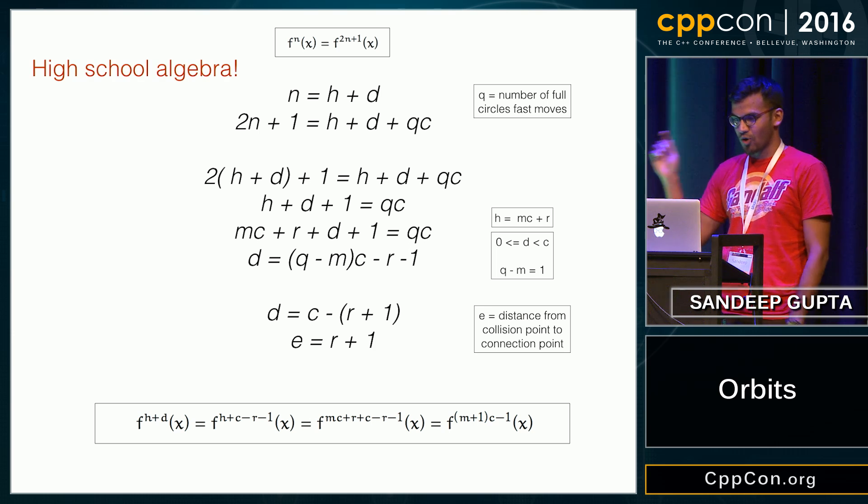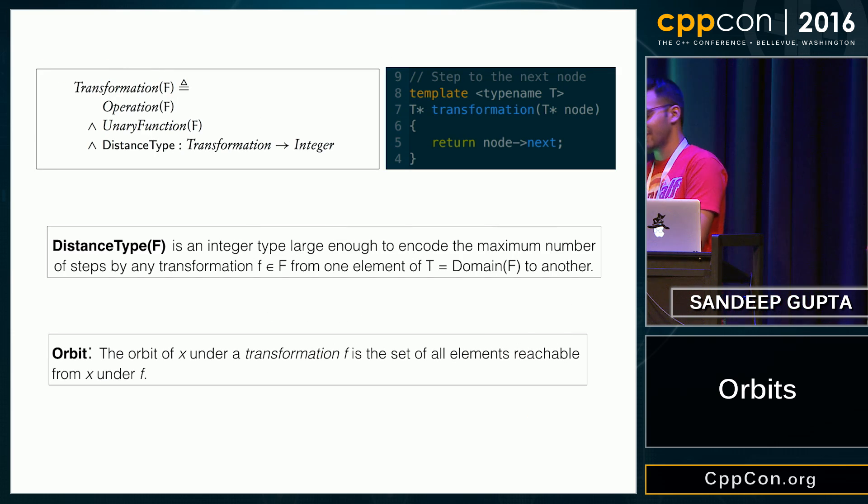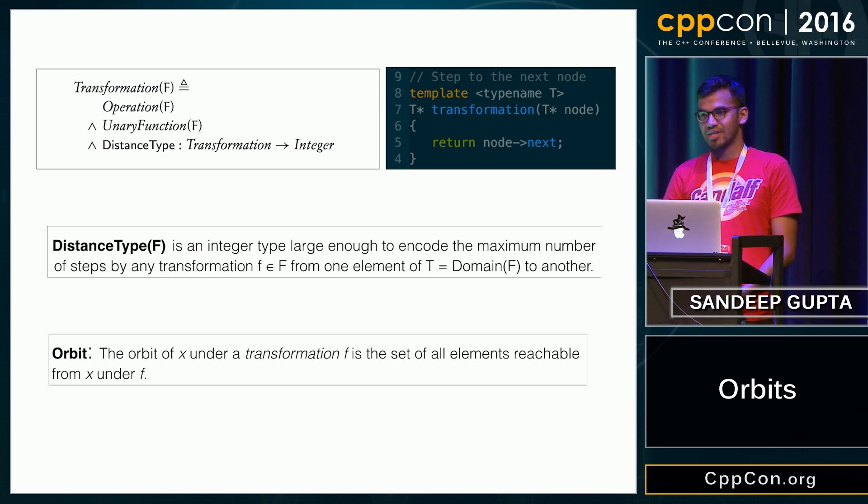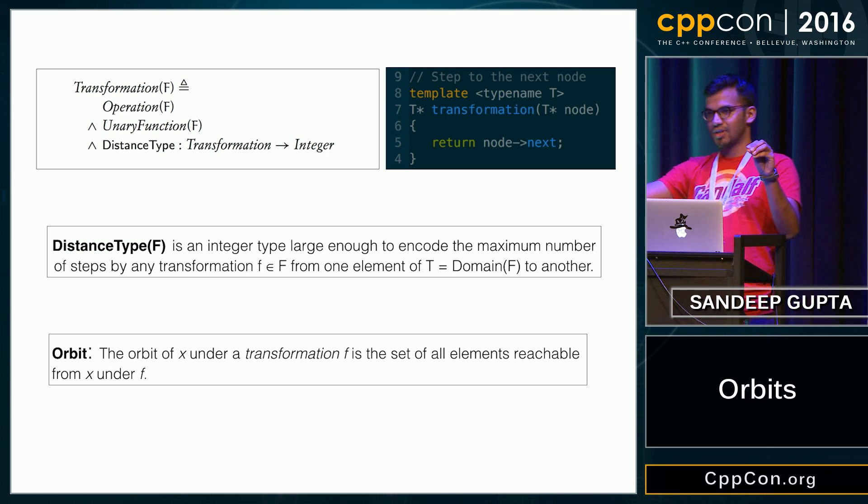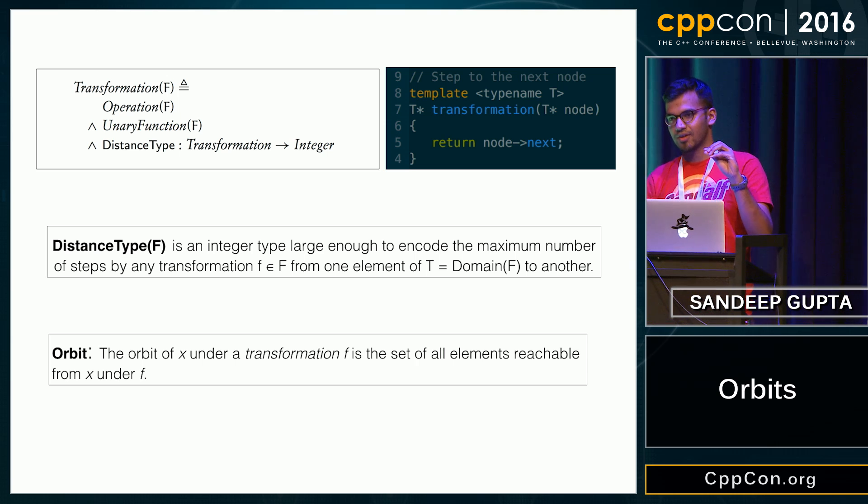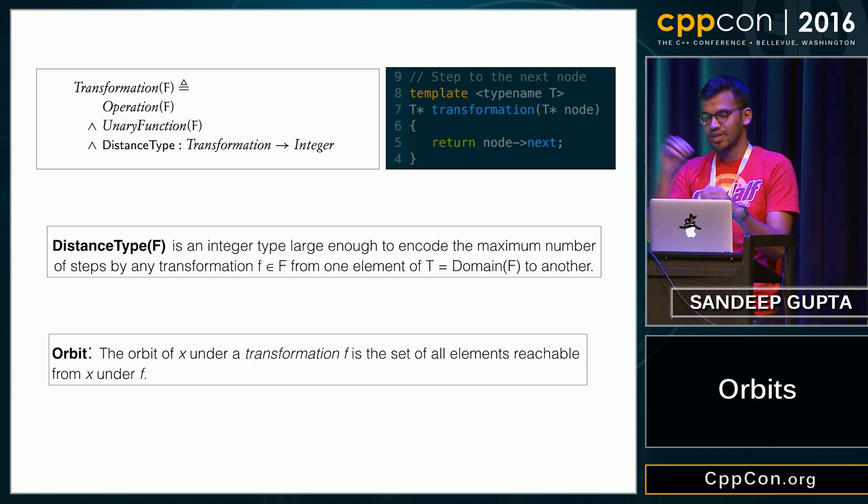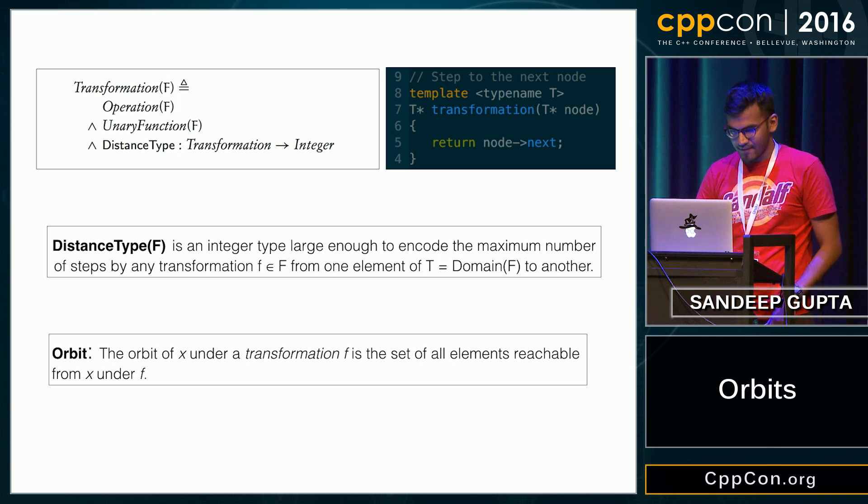So all of these concepts are formalized in Elements of Programming. So transformation is, when you move from one node in the linked list to another node, you are essentially applying a transformation to that node. And for the linked list, it is super easy. You are just getting the next value.